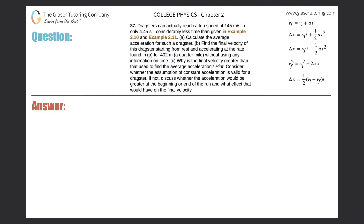Problem 37: Dragsters can actually reach a top speed of 145 meters per second in only 4.45 seconds, considerably less than that given in the examples. Letter A: Calculate the average acceleration of such a dragster.